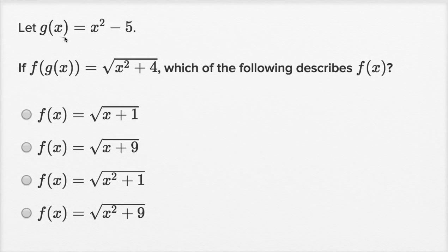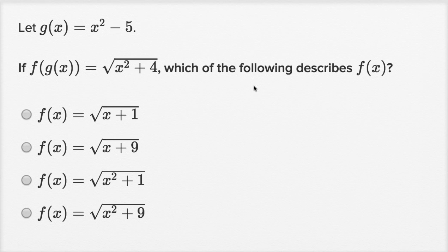Let g of x equal x squared minus five. If f of g of x is equal to the square root of x squared plus four, which of the following describes f of x? One way I could think about doing this is to just try each of these f of x's.